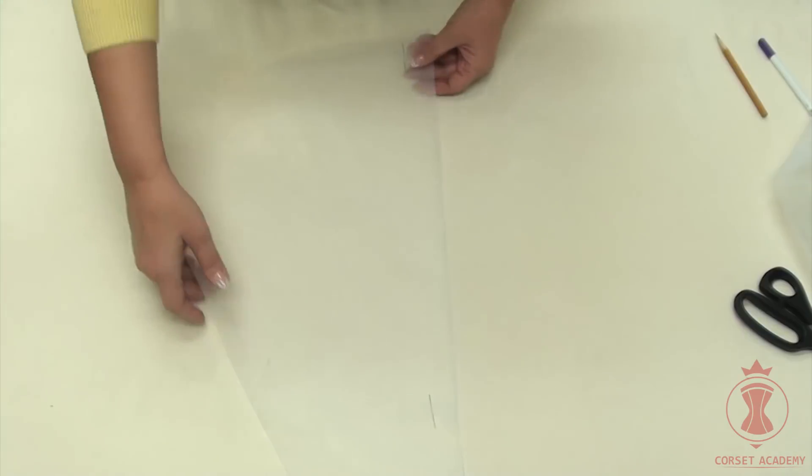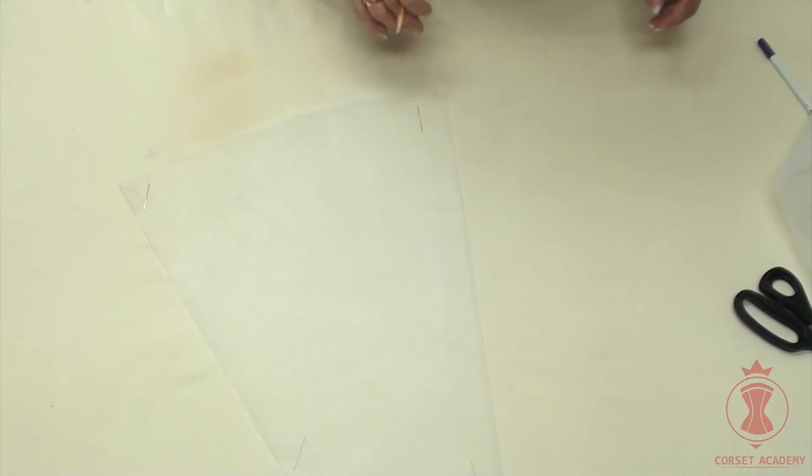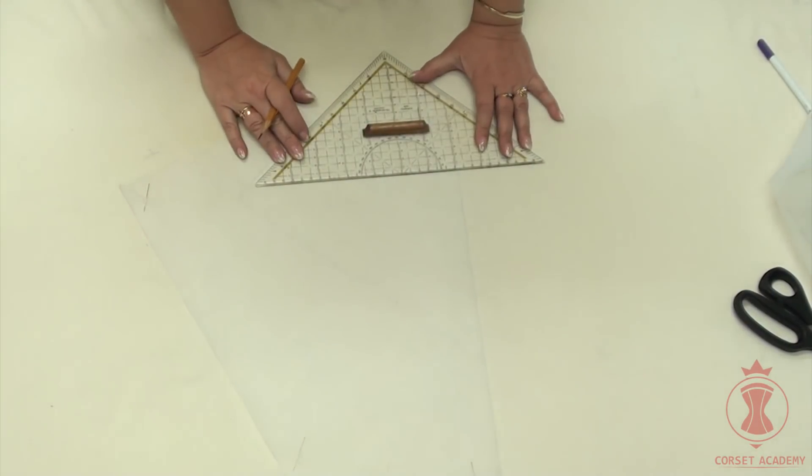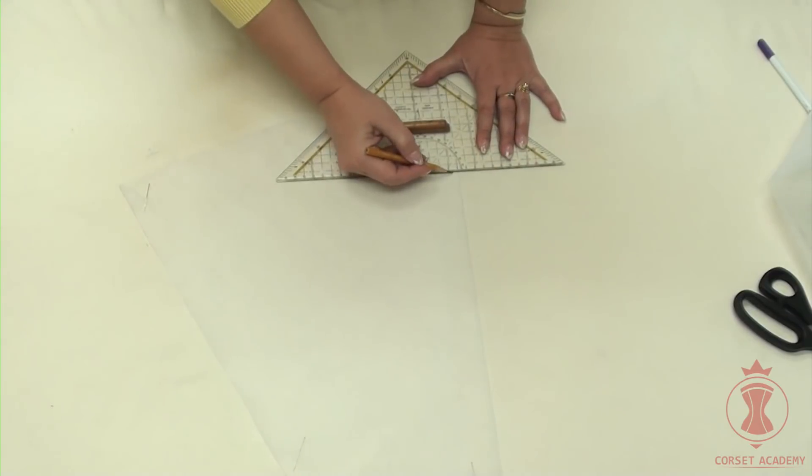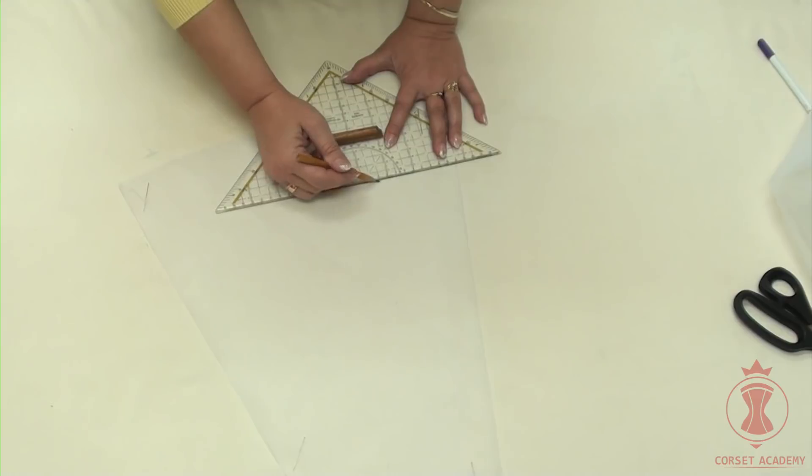I need to mark hoop positions. The bottom hoop will go along the bottom edge of the petticoat and the other two hoops will be positioned at 20 cm intervals, 10 cm intervals on the mock-up. I draw guidelines on the back pieces.